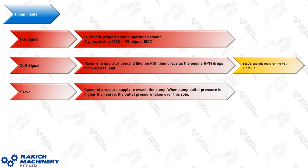These pumps rely on three different inputs to vary the output. The first is the PST signal, which is directly proportional to the operator demand — if the operator is deflecting a joystick to 100%, the PST signal will be 100% also. The XLR signal will also rise with demand like the PST from the operator, then will drop off as the engine RPM falls from excess load. The 6060s that have the LR disabled will use this logic or very similar to regulate the PST pressure. The servo pressure is a constant supply available to swash the pump; when pump outlet pressure exceeds servo pressure, it goes over a check valve and the outlet pressure takes over that role.